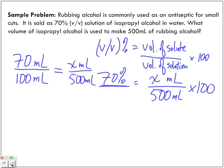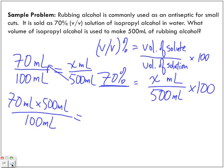So, we want to isolate for X and we bring the 500 over. We get 70 milliliters times 500 milliliters divided by 100 milliliters equals X. The milliliters cancel out.